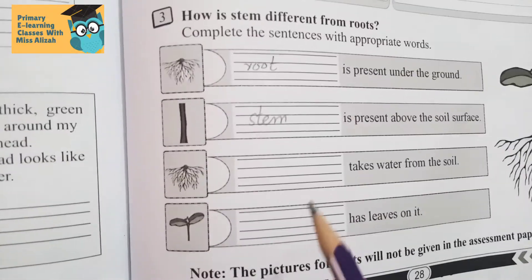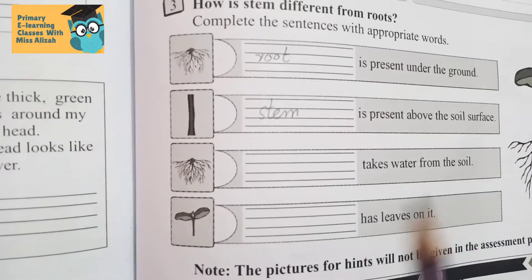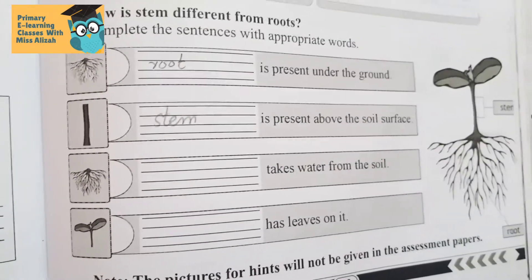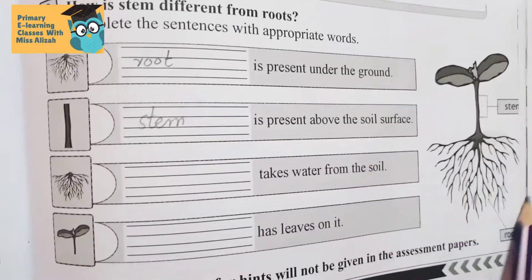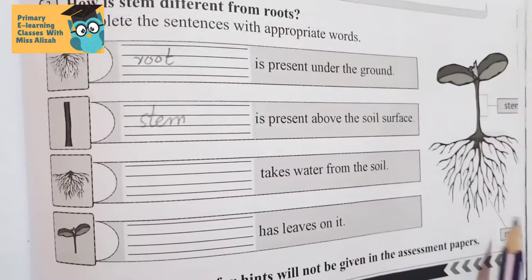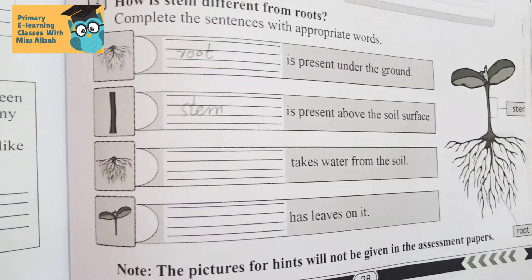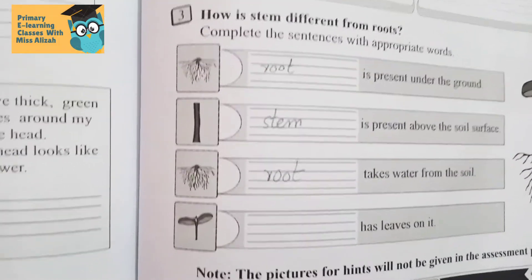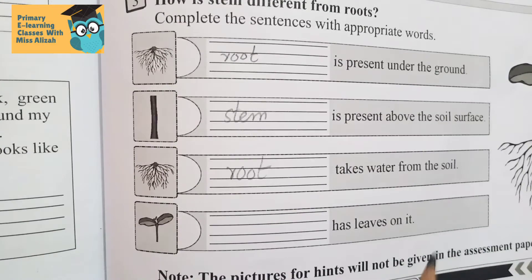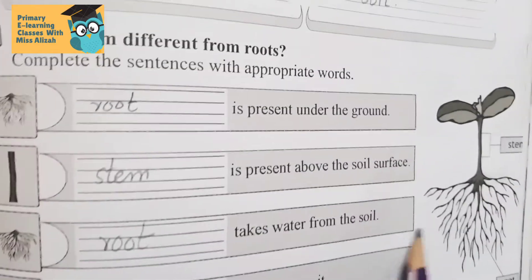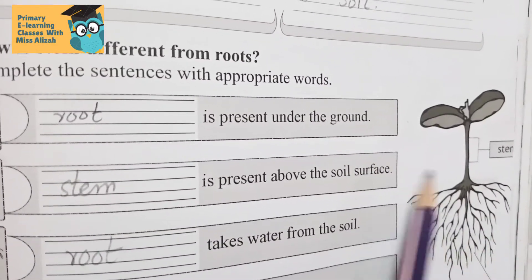Next blank: dash takes water from the soil. Which part of the plant takes water from the soil? That is our roots. So: root takes water from the soil.